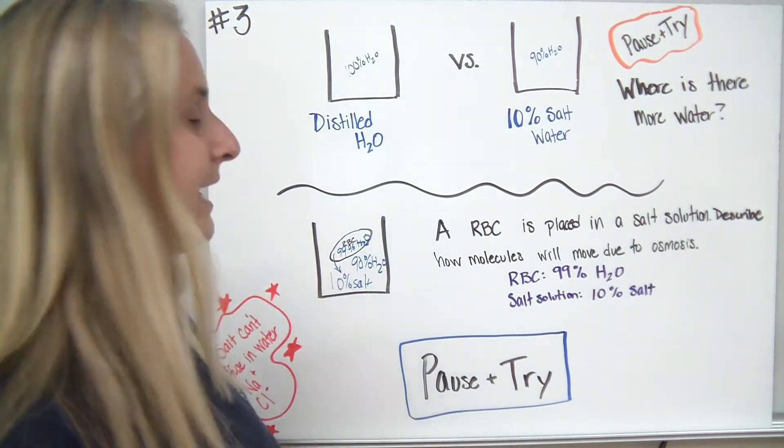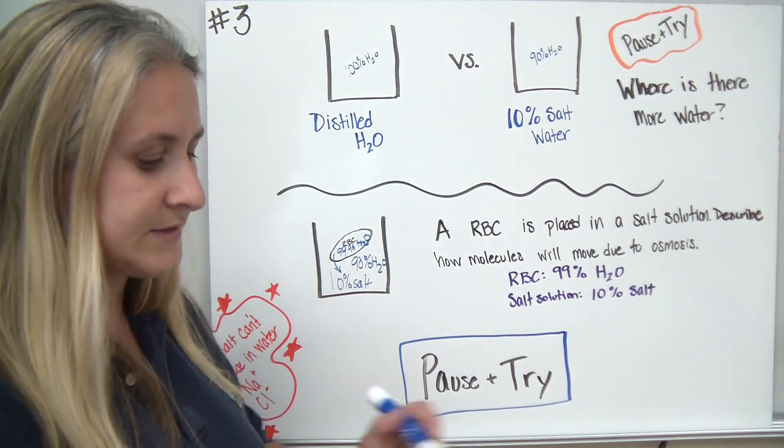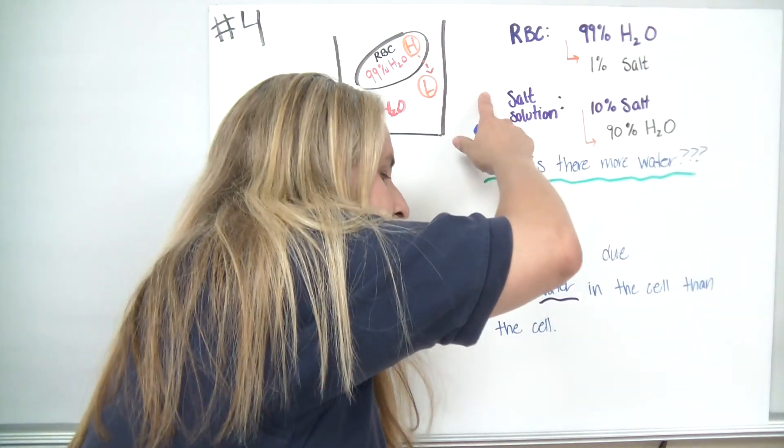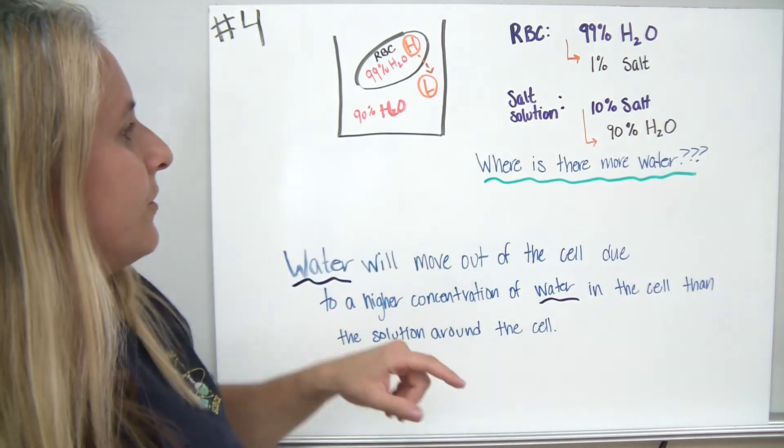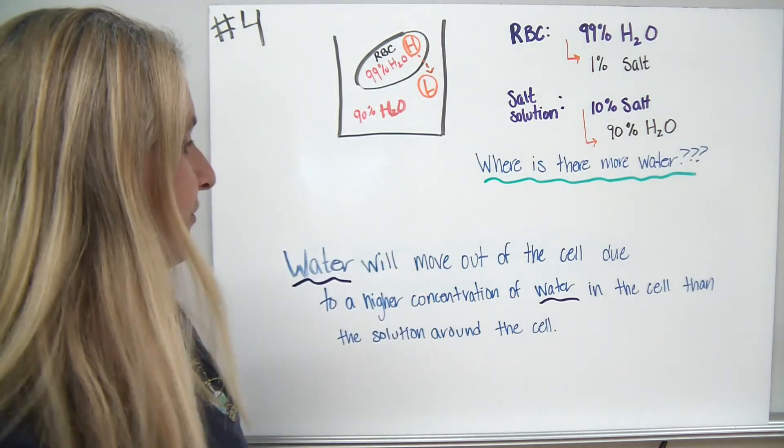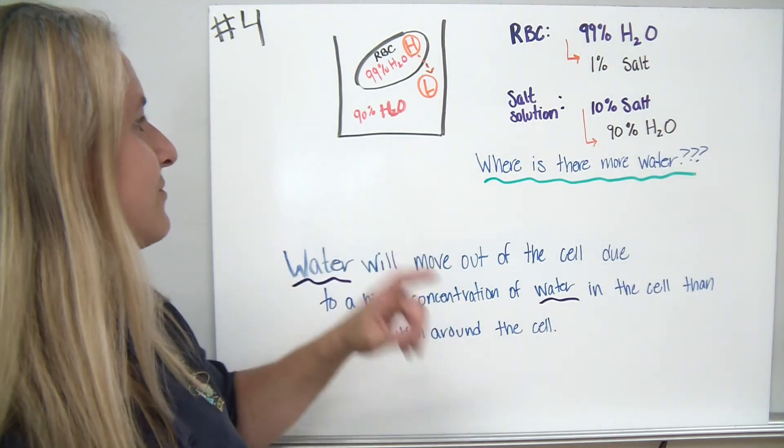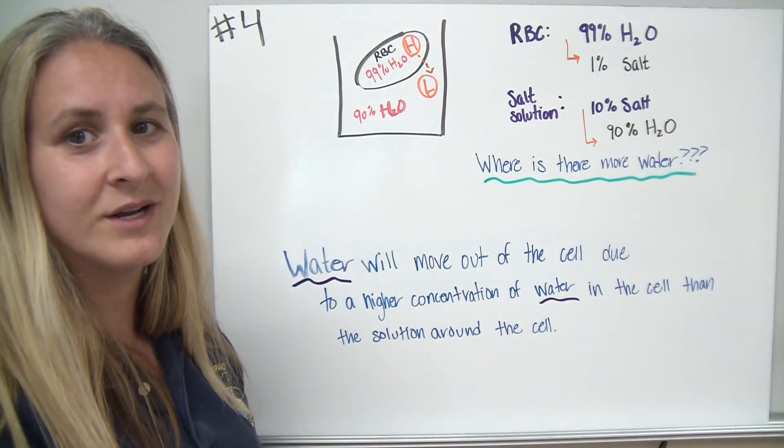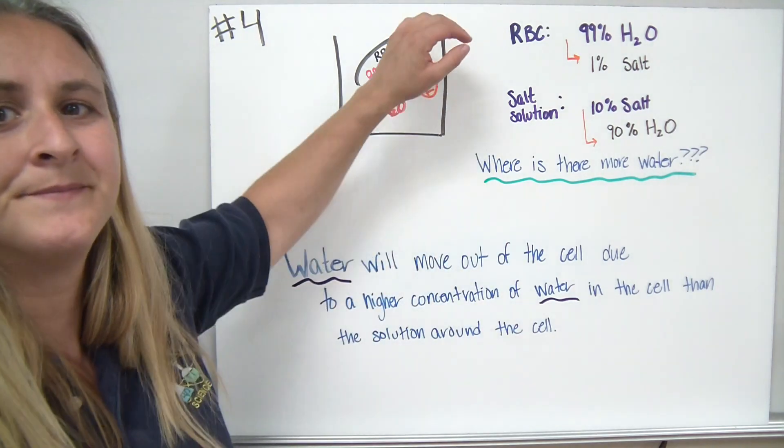In this case, my water moves out of the cells, dehydrating the cells, removing the water from the cells. In the next situation, we've got our red blood cells again. We're going to just recap what we did before. We have our red blood cell that has 99% water, a surrounding solution that has 90% water, and the water is moving from high to low concentration. The water will move out of the cell.